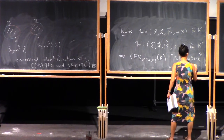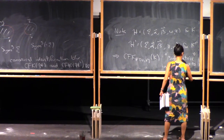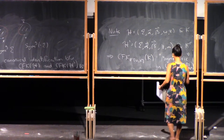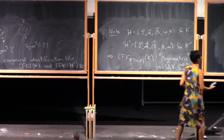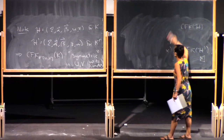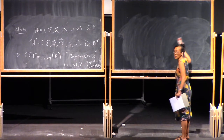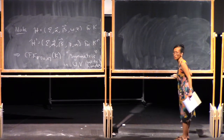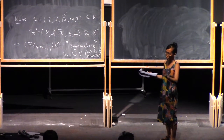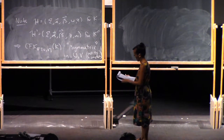The chain complex is symmetric up to chain homotopy equivalence under switching U and V — symmetric in U and V up to homotopy. If you look back to our computation for the trefoil, you can see that's indeed true. If you reverse the roles of U and V, you also need to reverse the U and V gradings appropriately, but you'll get back the same chain complex.